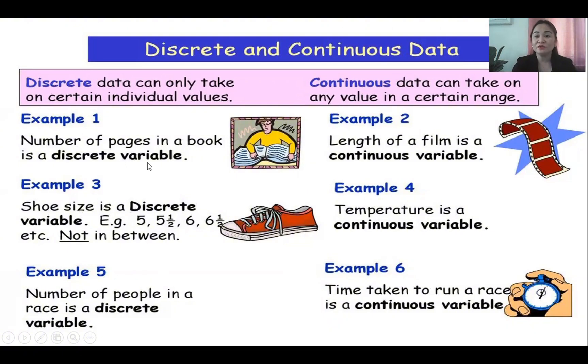While continuous, continuous data can take any value in a certain range, like the length of a film, temperature, time taken to run a race. That's continuous.